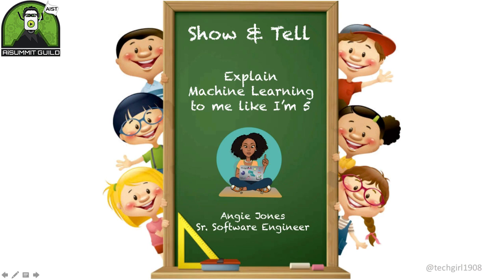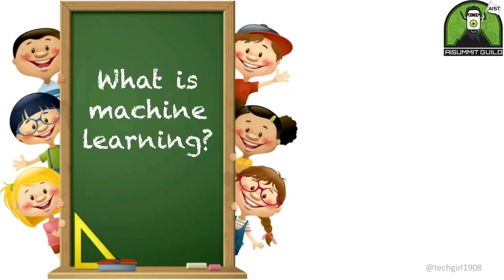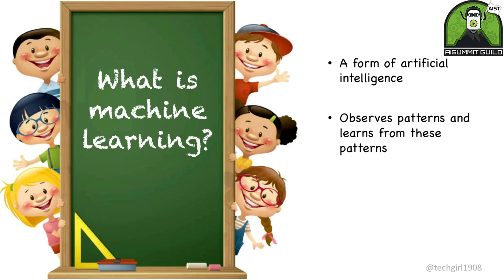I volunteer often with youth groups and I teach them about various topics in technology. When I teach them, I do so at the simplest level to ensure that they understand the basics. Today I'd like to take that same approach to explain machine learning. Machine learning is a form of artificial intelligence available for use today. It observes patterns, learns from them, and then uses what it learns to make predictions. So this is essentially machine learning in a nutshell.